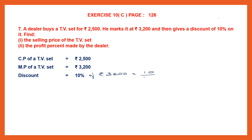10% means 10 by 100 into 3,200. We can cancel the zeros — a zero here and a zero here, and another zero here and there — so what is left is only 320. That means we have found the discount to be Rs. 320.